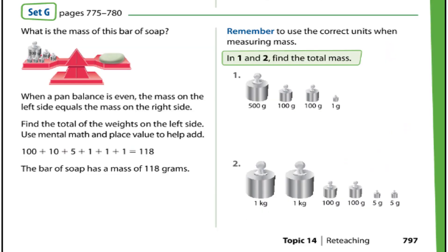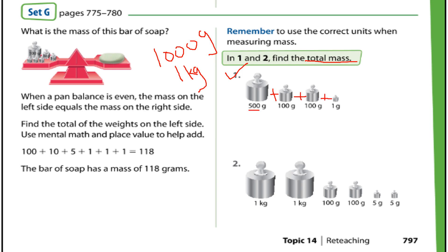Set G: find the total mass. How many grams make one kilogram? 1,000 grams equal one kilogram. For question 1, we add all the masses: 500 plus 100 plus 100 plus 100.